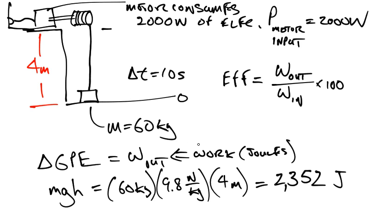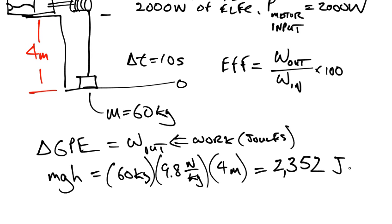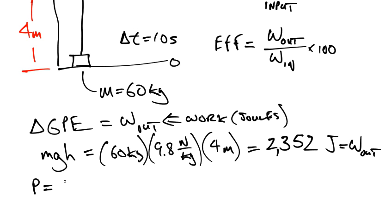Now that we know how much work out we have, how much work in do we have? It's not 2,000, you see. Because power is equal to work over time. Therefore, work is equal to power times time.